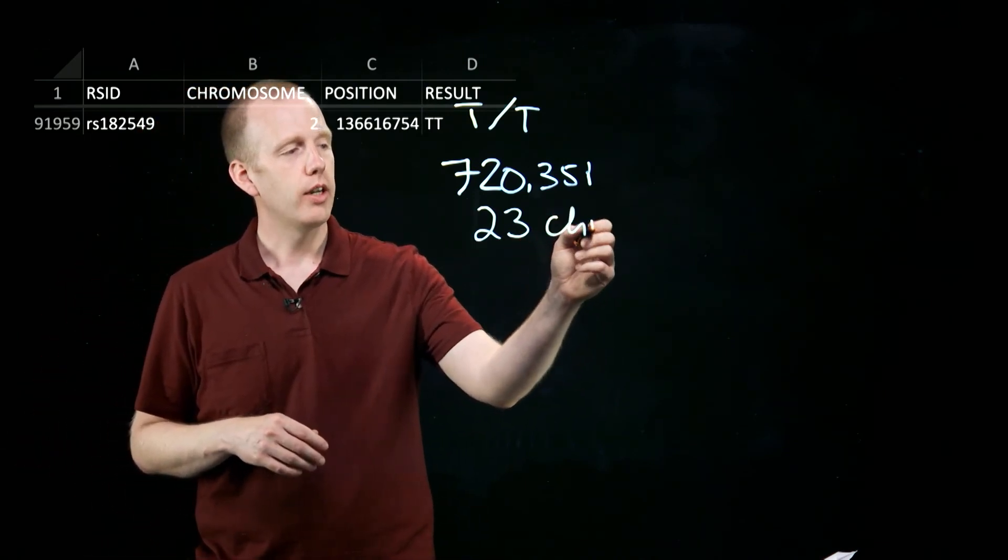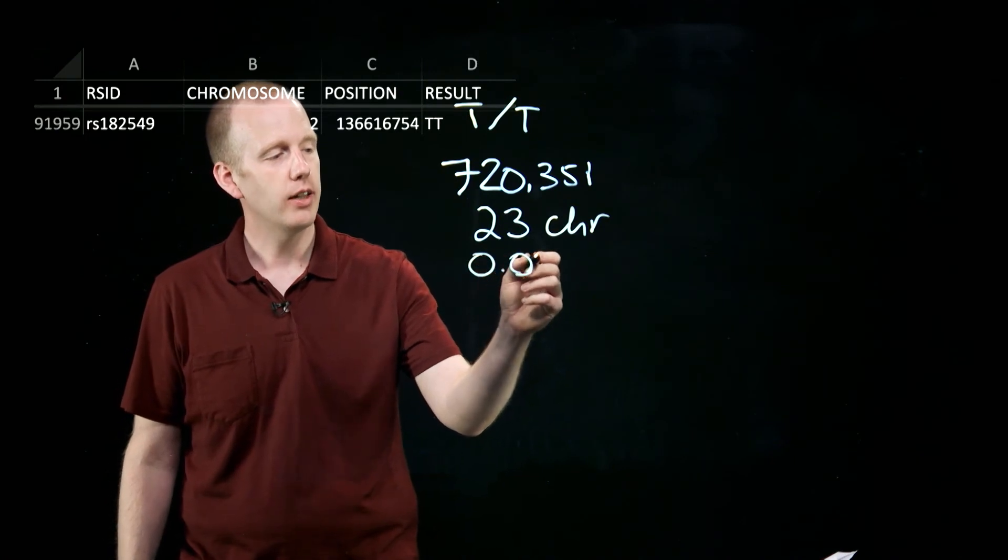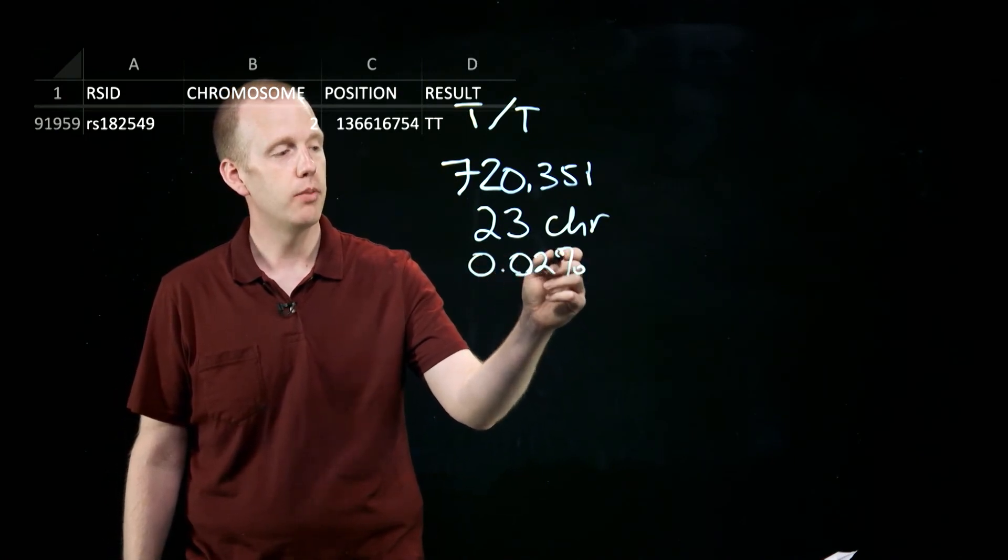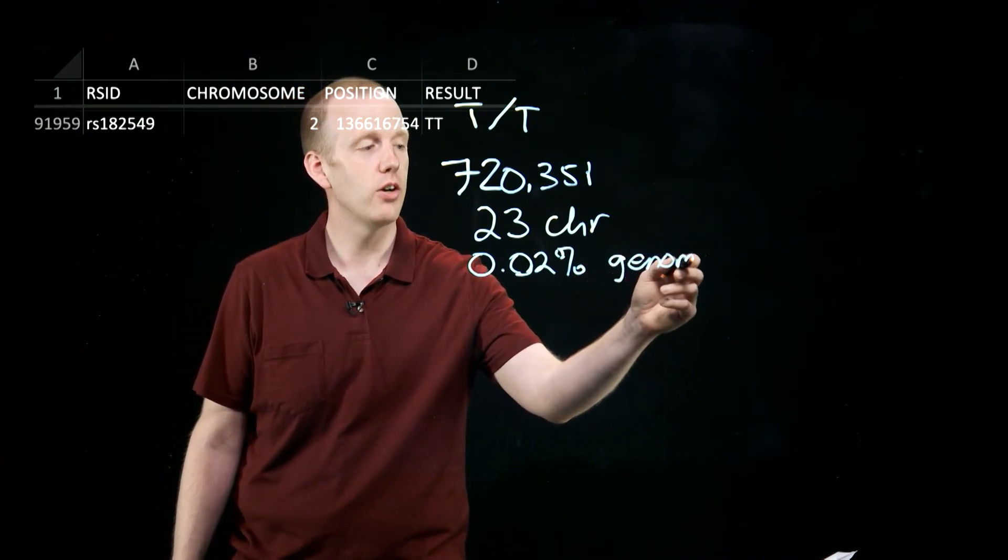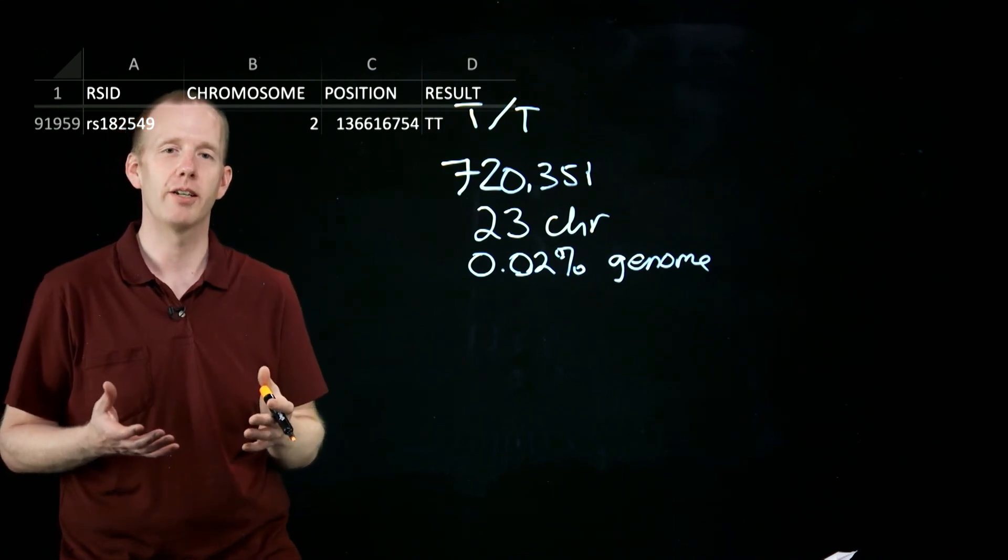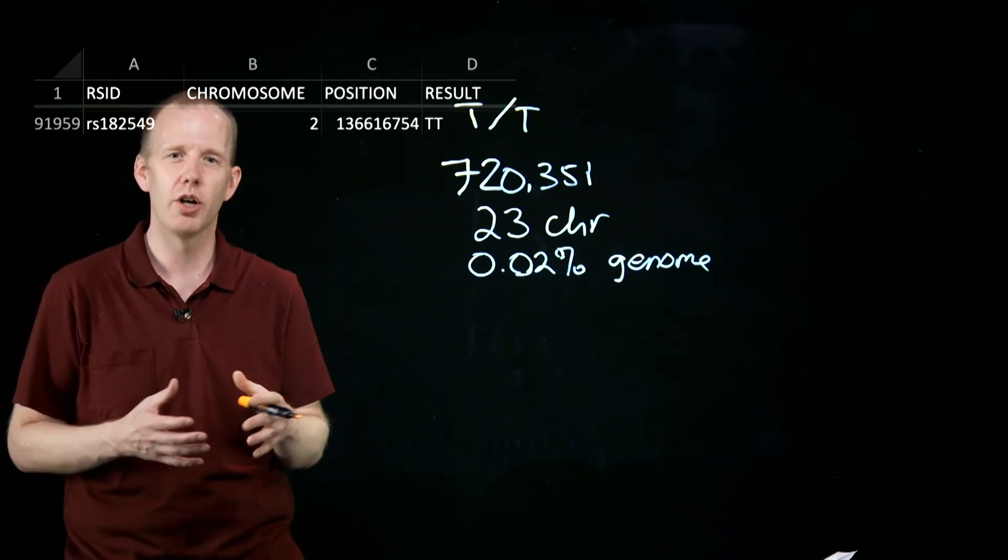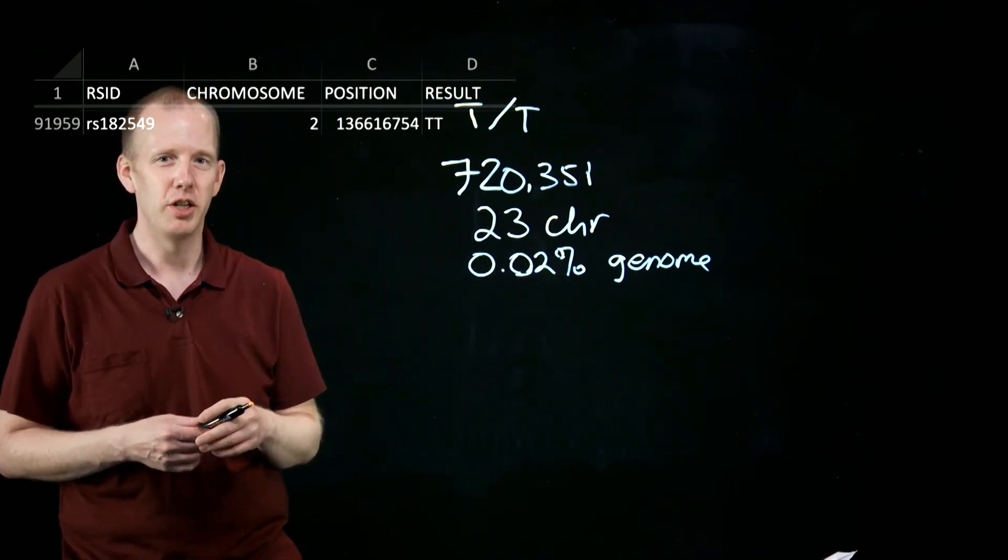In other words, looking at 23 chromosomes, these companies have genetically tested or determined my identity at about 0.02% of the entire size of my genome, which is about 3 billion nucleotides. So if you look at 720,000 or so, you've read about a tiny fraction of the genome.